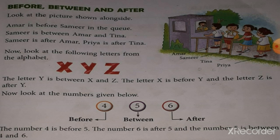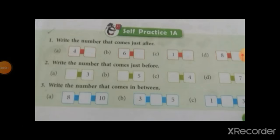Now look at the numbers given below: 4, 5, 6. The number 4 is before 5. The number 6 is after 5. And the number 5 is between 4 and 6. Question 1: Write the number that comes after. What number comes after 4? 5. What number comes after 6? 7. Question 2: Write the number that comes just before. What number comes before 3? 2. What number comes before 5? 4. Question 3: Write the number that comes in between. What number comes between 8 and 10? 9. What number comes between 3 and 5? 4.